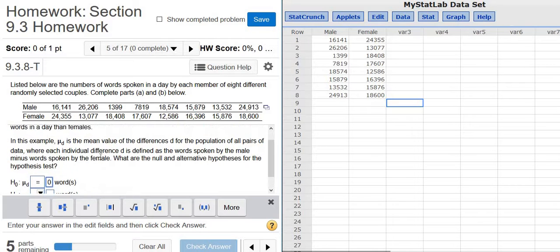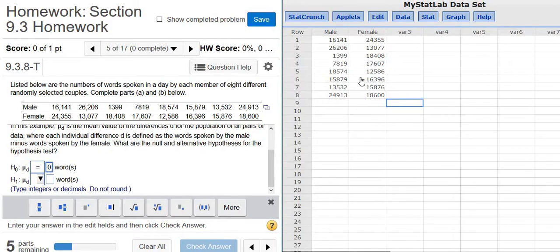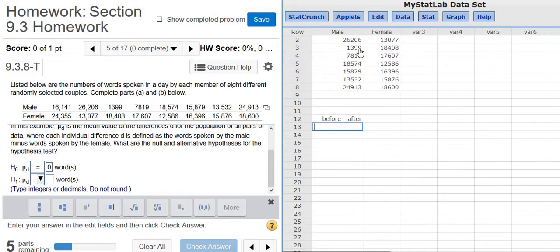And then we want males to speak fewer words than females. So we have to think about whether this is going to be less than zero or greater than zero. So if males speak fewer words than females, what you do is you do before minus after, always, before minus after. So in this case, we want males to speak fewer words. So when you do before minus after, you should get a negative number.